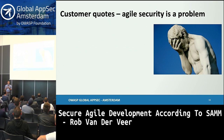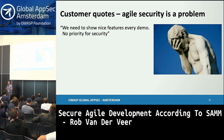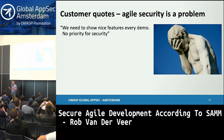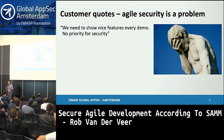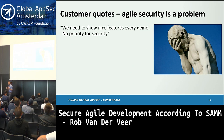Just to illustrate the problems in practice, I took out some real customer quotes about Agile security. First, a typical one: 'We need to show nice features every demo, so there's no priority for security.' In a typical Agile Scrum sprint demo, the tendency is to focus very much on features and not mention non-functional things like security. The best practice is to involve security in your story and explain to the business what you've done to make the system secure — even using examples of incidents to be clear about how important security is.